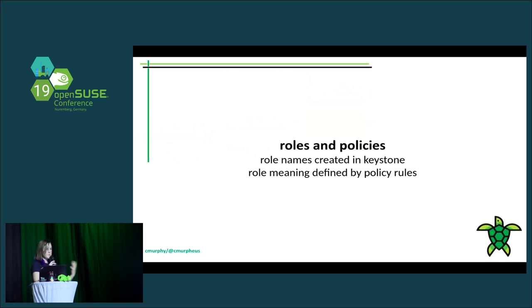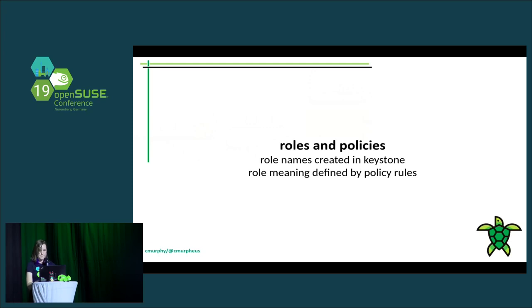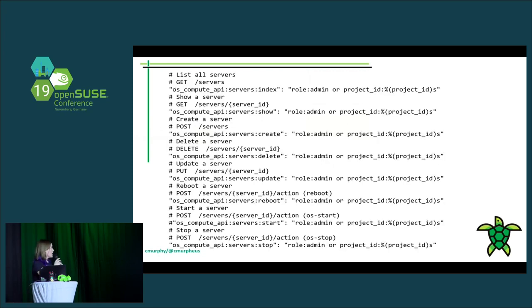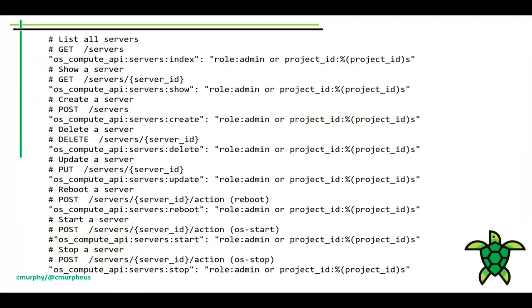Roles are just names in the Keystone database. What a role means is actually defined in policy rules owned by these other component services — a side-effect of how OpenStack is developed as disjoint components. The other services are always creating new APIs, and Keystone doesn't have the authority to say what access level each API should have, so we delegate that to the other services. The defaults are set by the services themselves, and overrides are configured by the cloud operator.